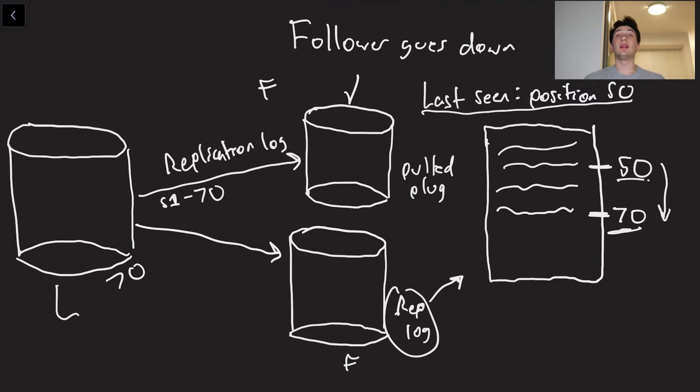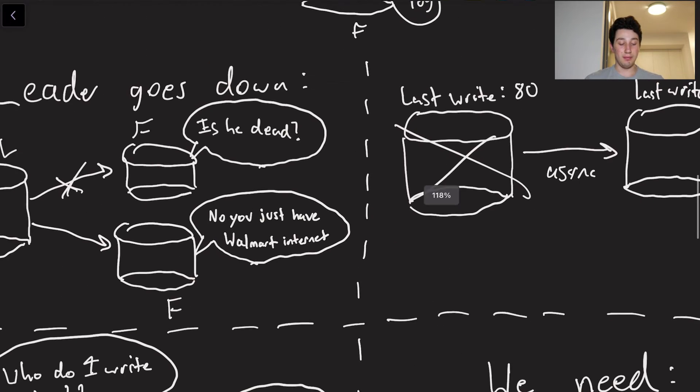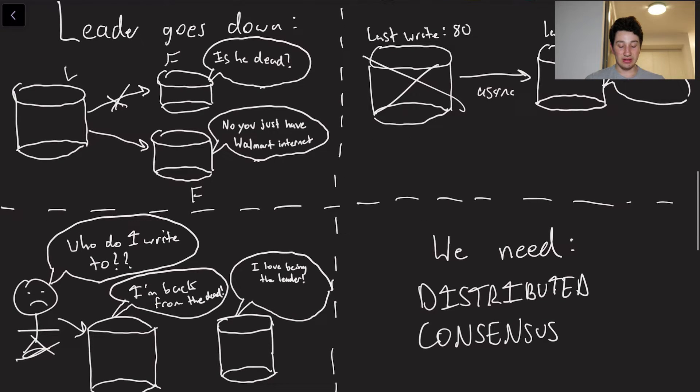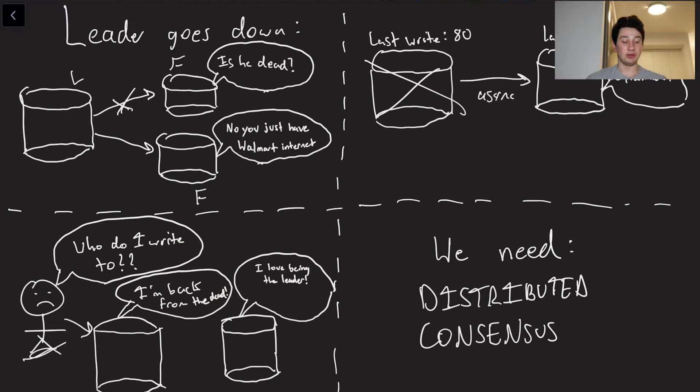On the other hand, when a leader goes down, we've got many, many challenges to deal with. So let's discuss basically three different scenarios of things that can go wrong when a leader goes down, and we'll kind of explain why this is such a big deal in a single leader replication setup.